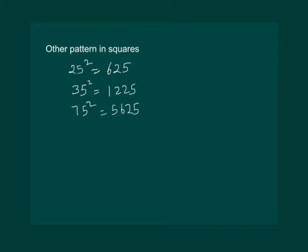We can easily notice that all the numbers have 25 as their last two digits. Then what about 6? We know that 6 can be written as 2 into 3. Similarly, 12 can be written as 3 into 4, and 56 would be 7 into 8.